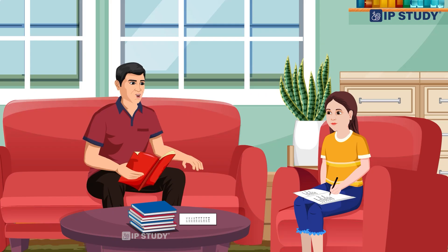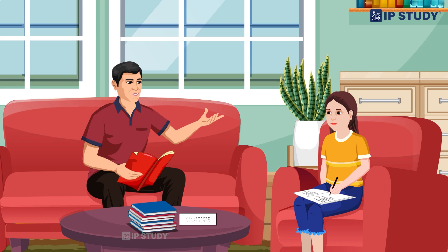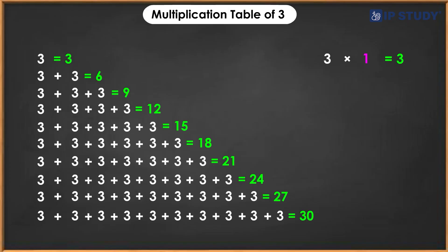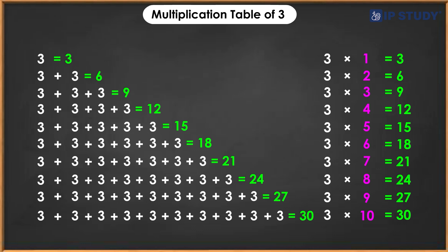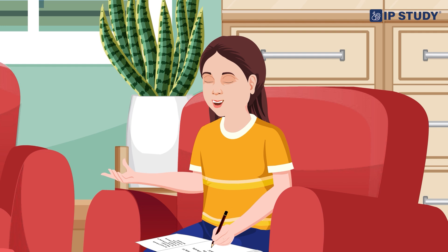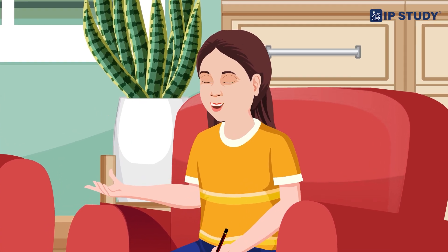In the same way, we will learn the table of three. One times three is three, two times three is six, three times three is nine, four times three is twelve, five times three is fifteen, six times three is eighteen, seven times three is twenty-one, eight times three is twenty-four, nine times three is twenty-seven, ten times three is thirty. Oh, this is amazing dad! I could learn in this way very easily.